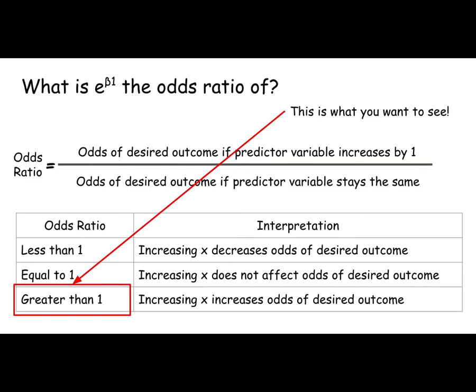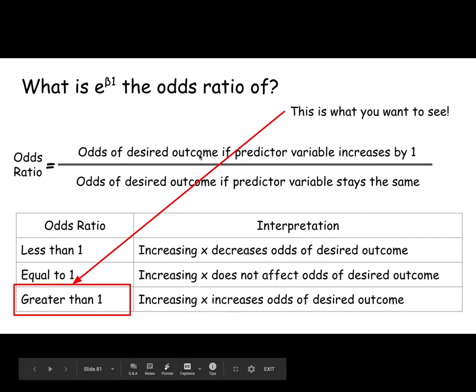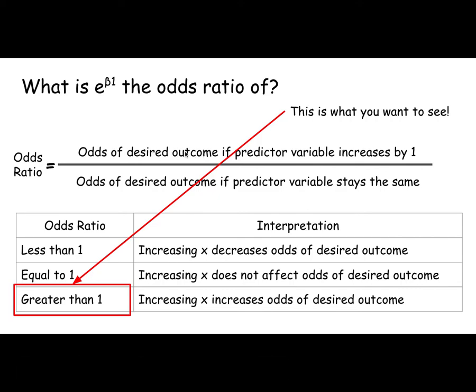So what is this odds ratio? When they report the odds ratio, what they're typically telling you, unless they say otherwise, is it's the odds of a desired outcome if the variable increases by one over the odds of a desired outcome if the variable stays the same.